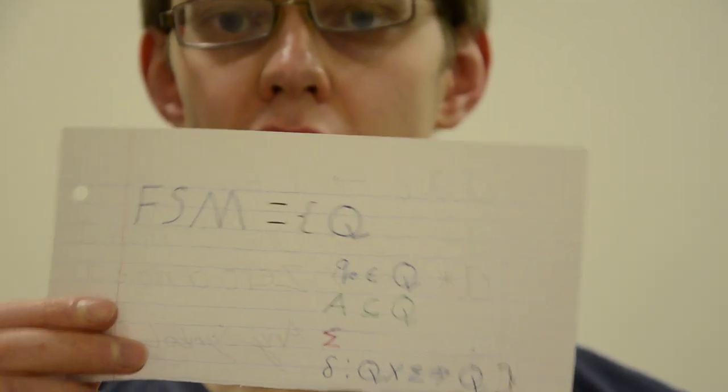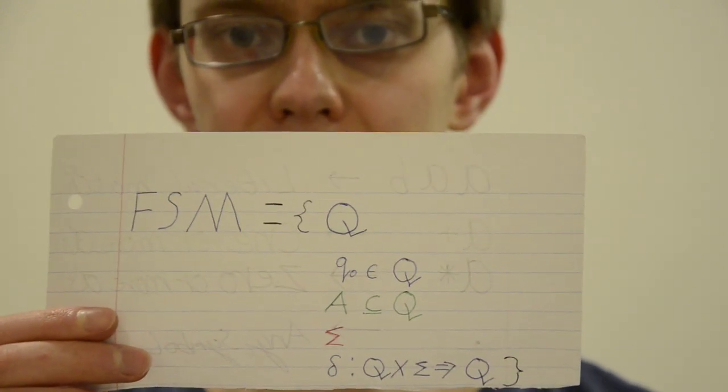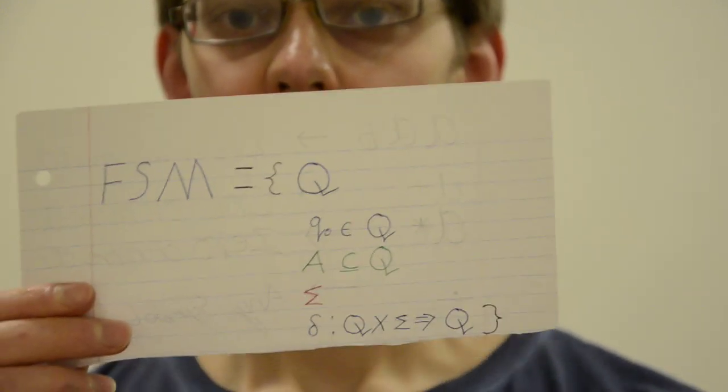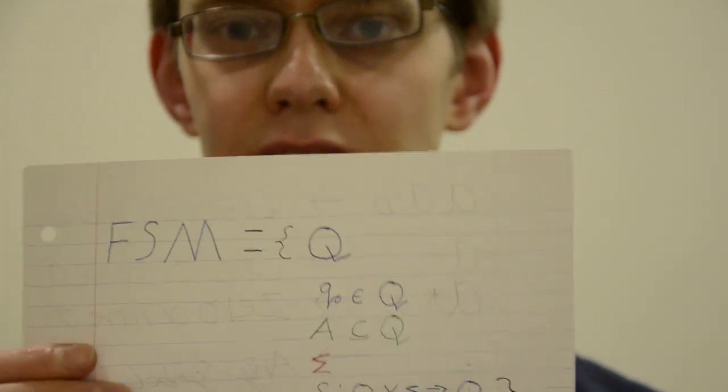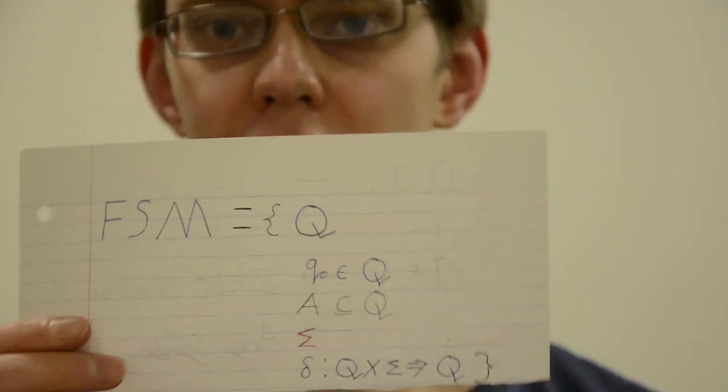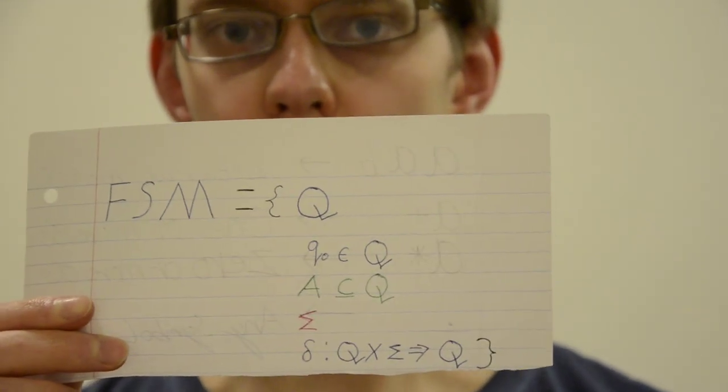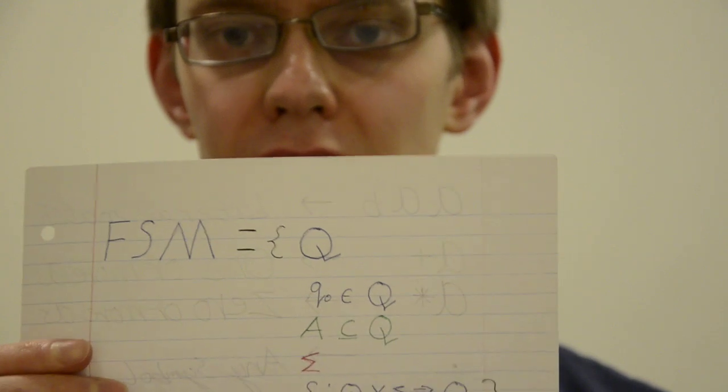And finally the transition function which will be in the size area of the alphabet times the states because obviously for every state it has to be able to transition to another state or stay where it is or at least react for every symbol in the alphabet.